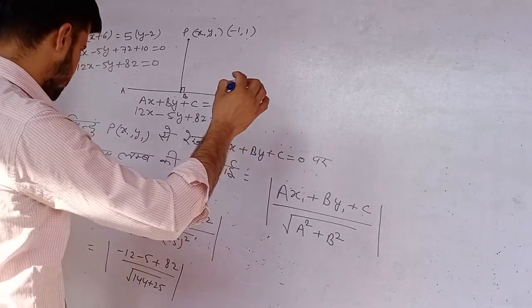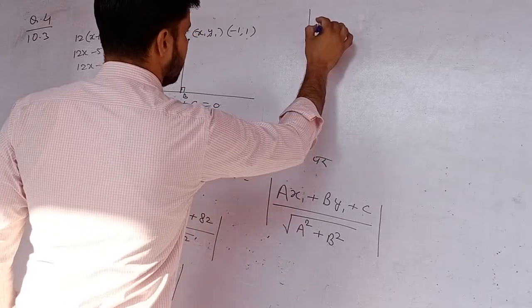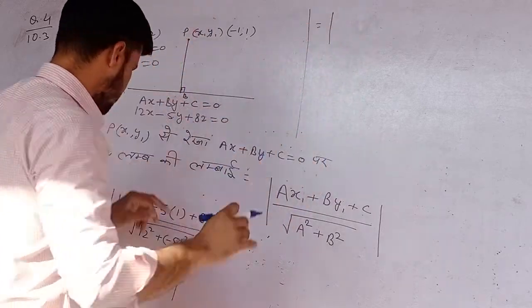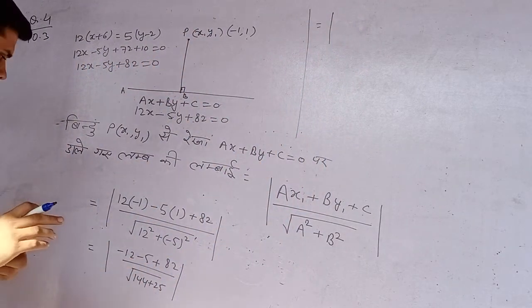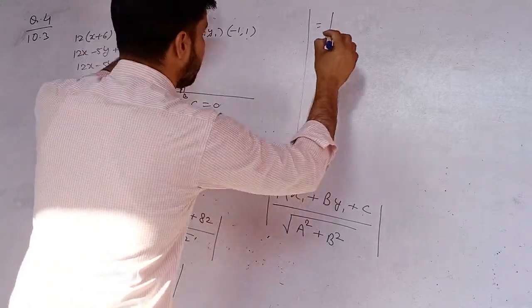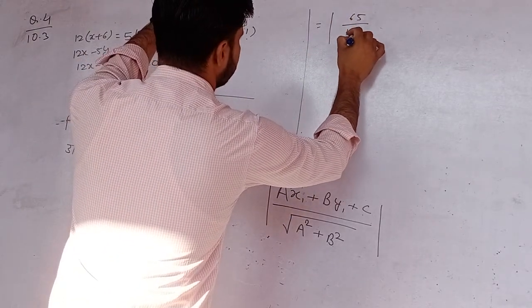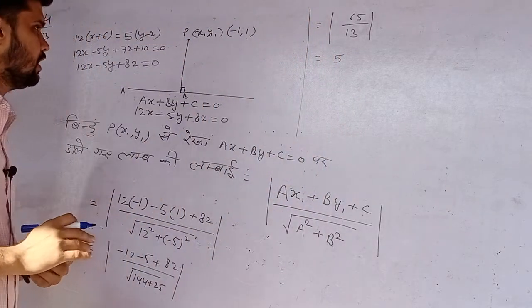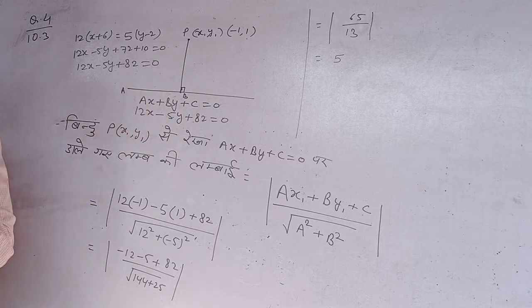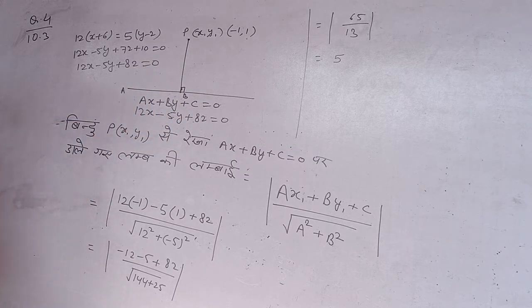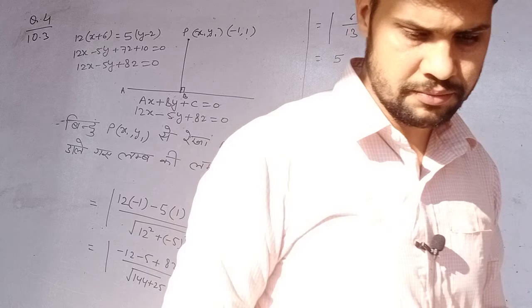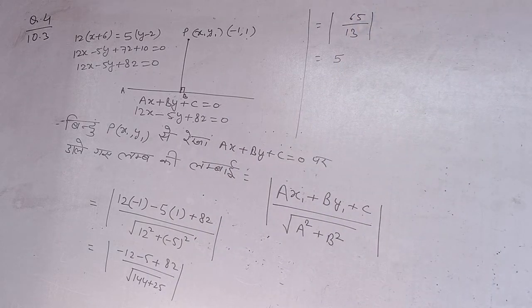तो −12 − 5 + 82, बटे में √(144 + 25)। इस तरफ करते हैं: 82 में से 17 घटाओगे तो 65 आएगा, और बटे में आएगा 13। तो इसकी value लोगे तो plus का 5 — इस बिंदू से इस रेखा पर डाले गए लंब की लंबाई 5 इकाई आएगी। ठीक है — यह सुत्र याद रखना।